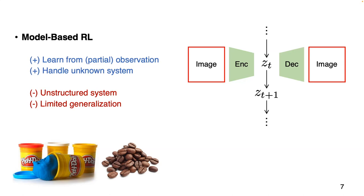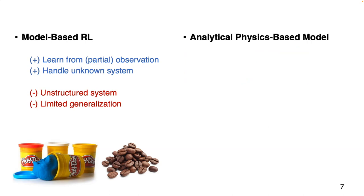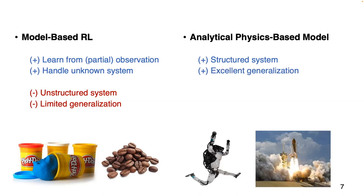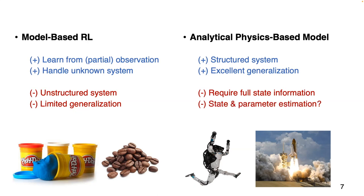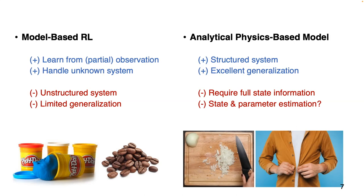The other way to build a predictive model is based on analytical physical equations like F = ma. This is arguably the most compact way to encode structure and has excellent generalization — extremely useful for constructing models for Boston Dynamics robots and rockets. However, such physics-based models rely on the assumption that full state information is available, which is often not the case. For example, estimating the state of each onion piece is hard and sometimes impossible, and shirt buttoning requires only local information rather than full state information.